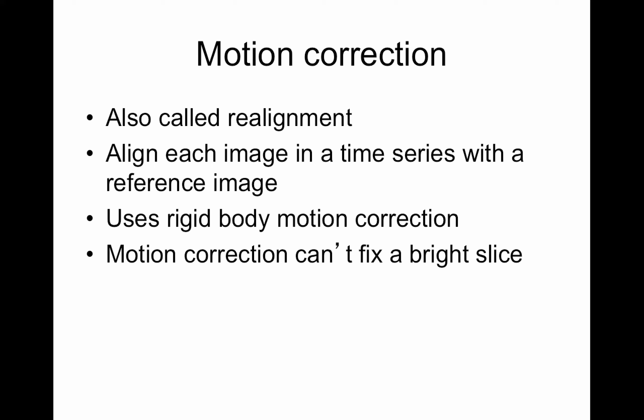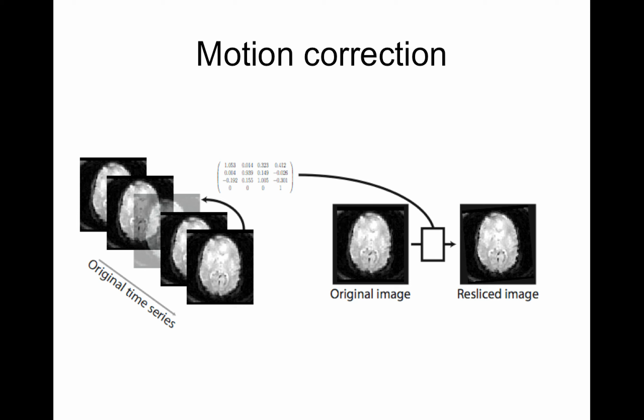Motion correction uses a rigid body correction, which means a six-parameter affine image transformation — only rotations and translations in X, Y, and Z are possible. This type of motion correction obviously can't fix something like a bright slice in the data. Usually when you have motion artifact with interleaved acquisition you'll get a bright slice, and this won't fix that. It also won't fix a corrupt TR where the whole image is really bright.